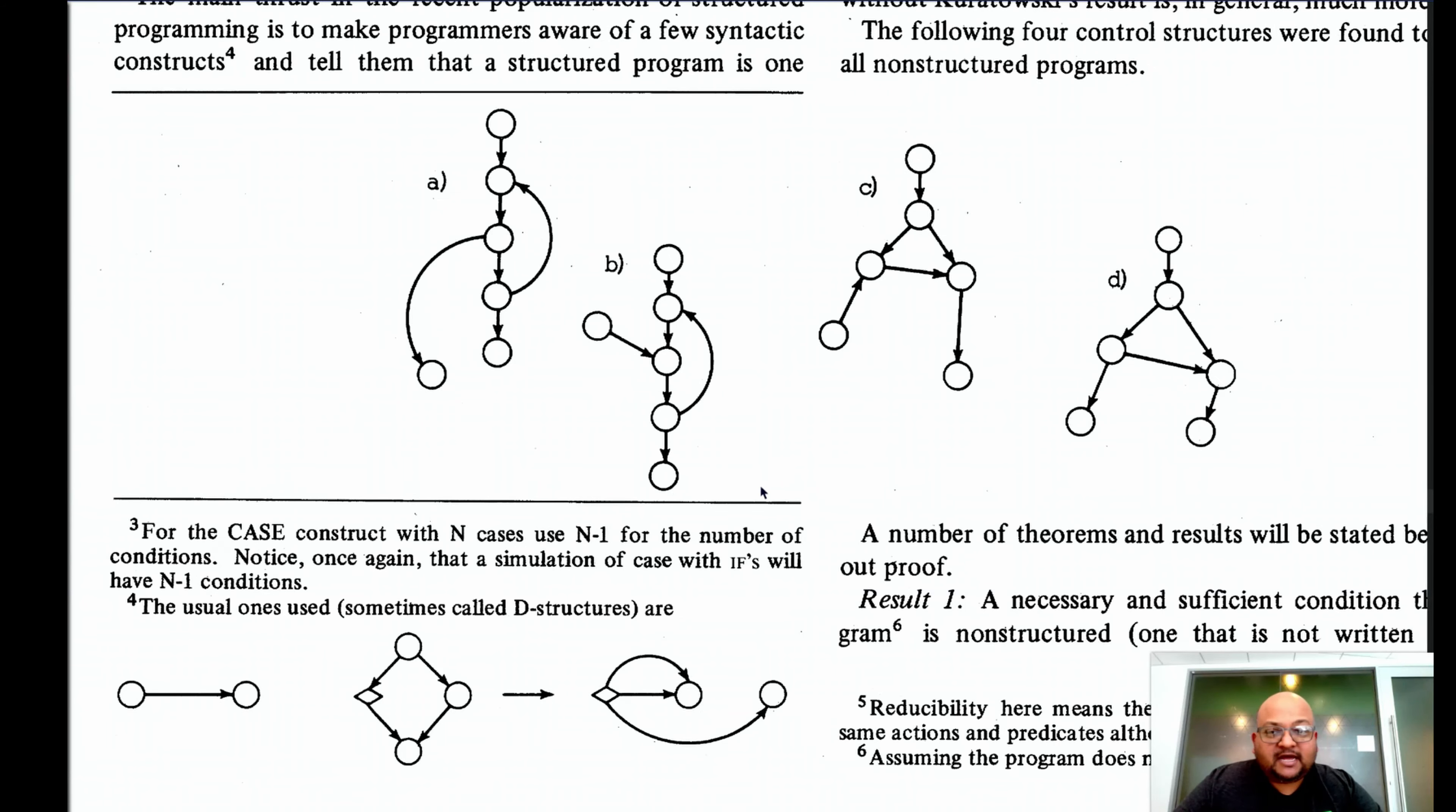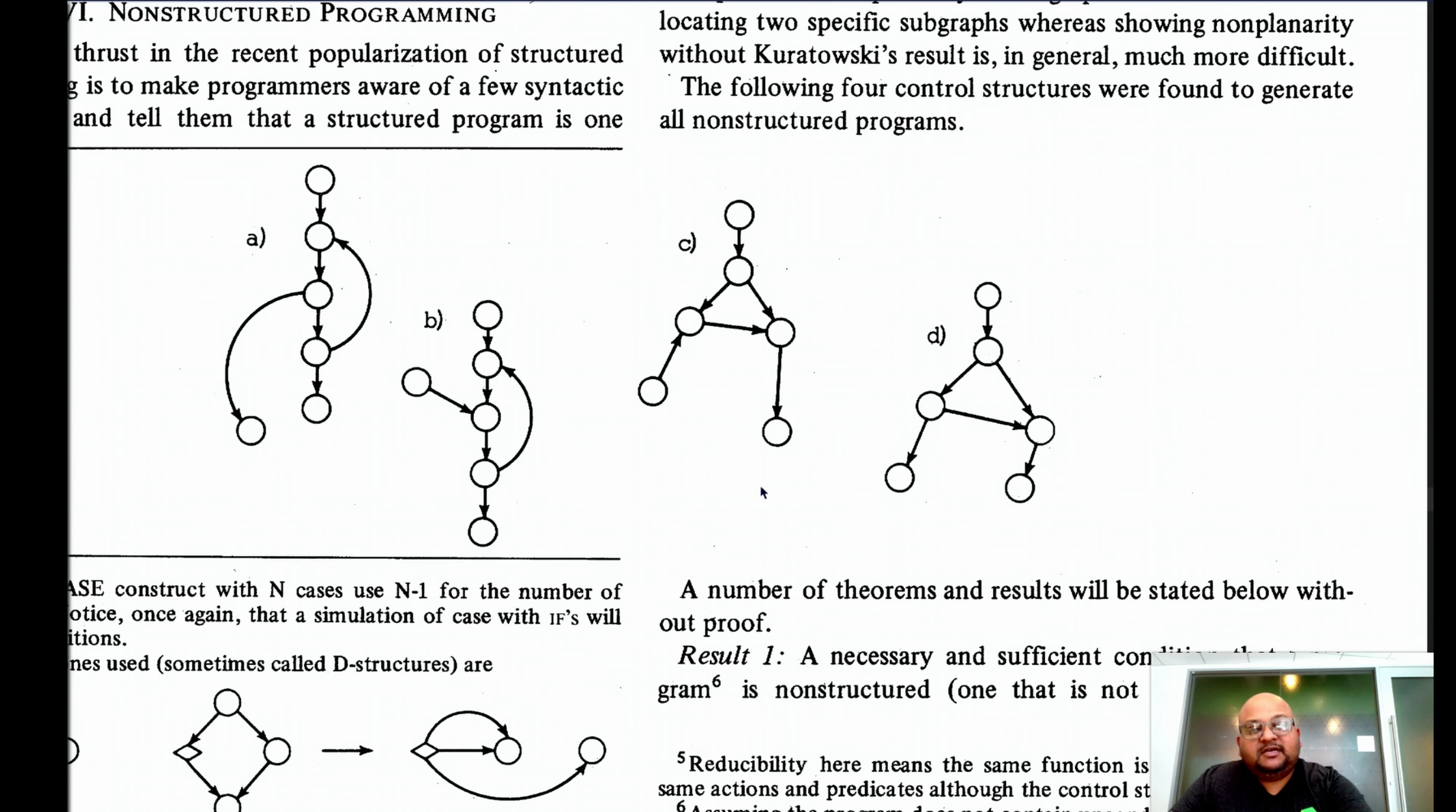Next, the author looks at the relationship between cyclomatic complexity and unstructured programming. He makes the really interesting observation that only four control structures are able to generate all unstructured programs. And it is these four graphs. Now, by the looks of it, you can't tell what exactly is happening here.